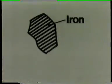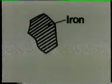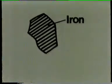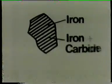The other grains, like this one, are made up in layers. The white layers are iron. The black layers are a chemical compound of iron and carbon, called iron carbide.